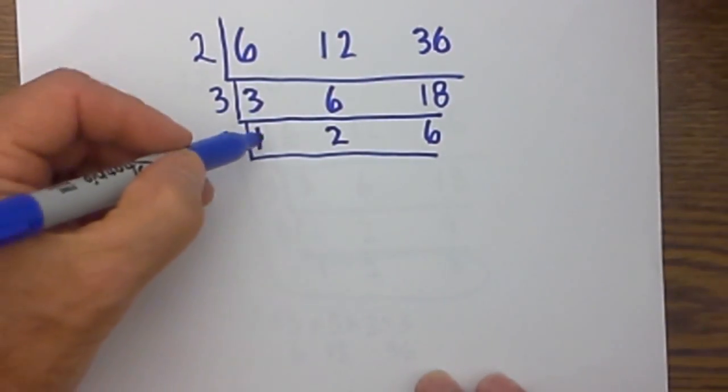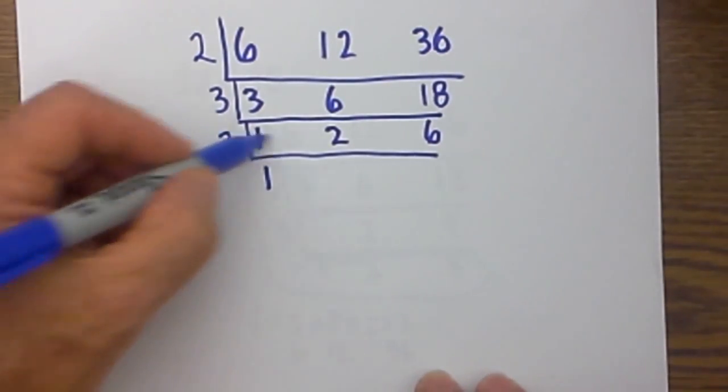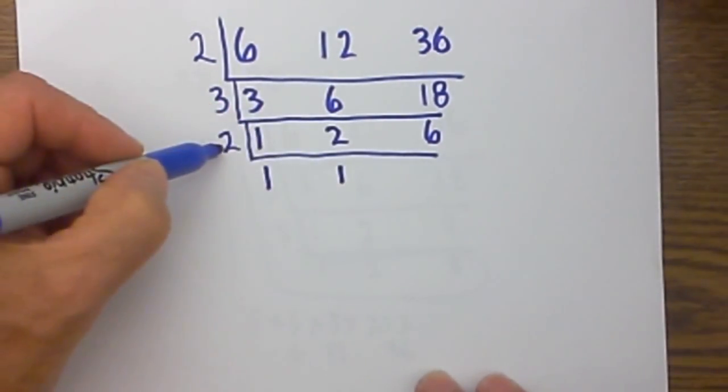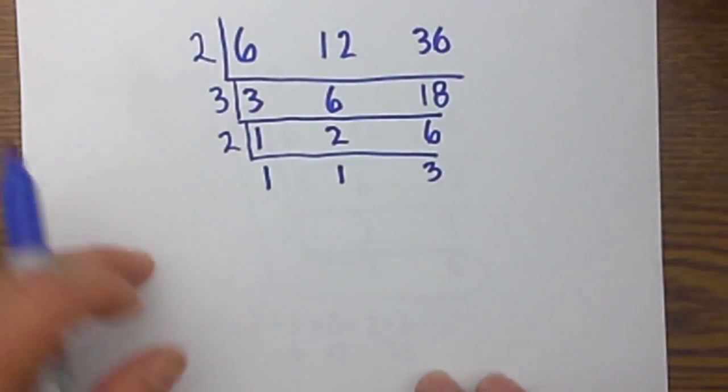I am still not at all prime so I will repeat with the number 2. 2 will not divide into 1 so I will bring the 1 down, 2 will divide into 2 one time and 2 will go into 6 three times. I am now down to all primes.